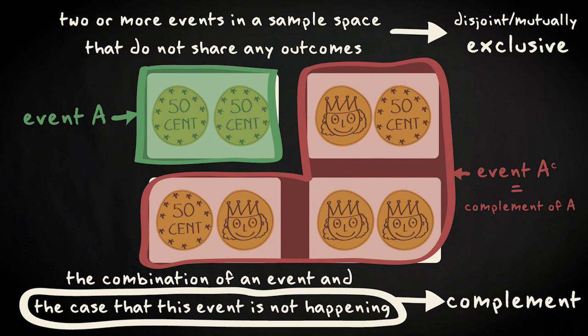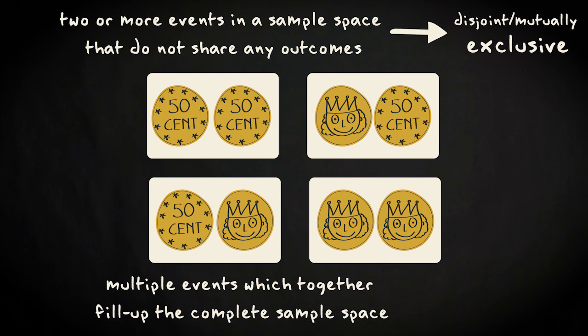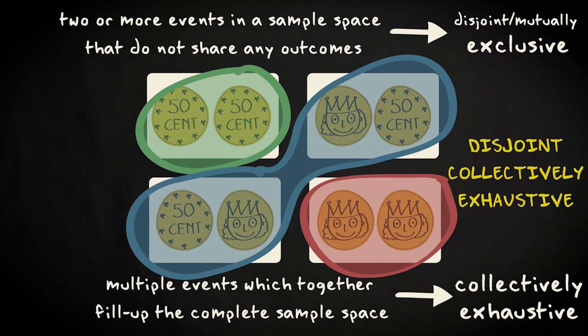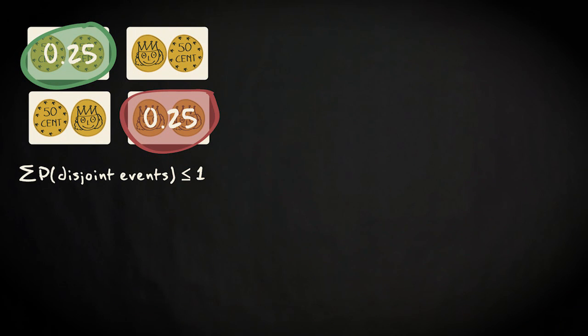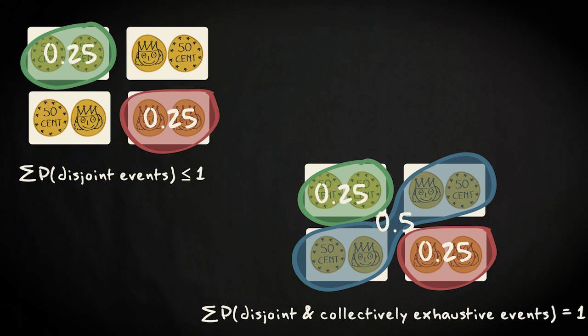You can also have multiple events which together fill up the complete sample space. These events are called collectively or jointly exhaustive. If they don't overlap, they would be disjoint collectively exhaustive. The sum of the probabilities associated with disjoint events will be smaller than or equal to one, but the sum of the probabilities associated with collectively exhaustive events will be equal to one.